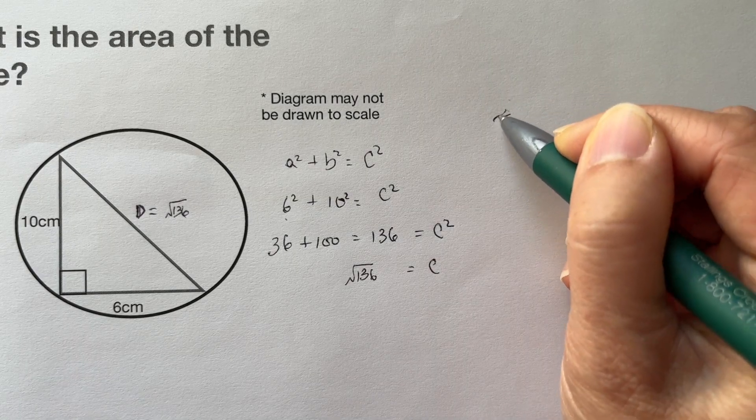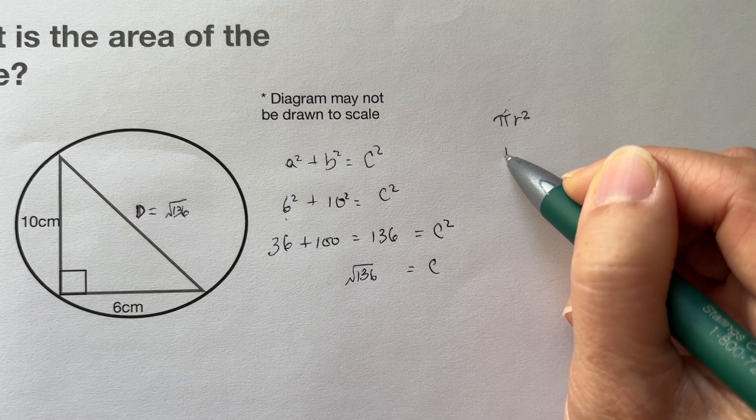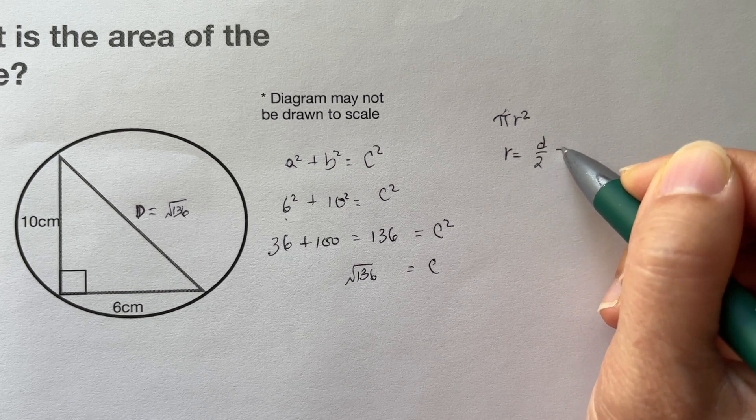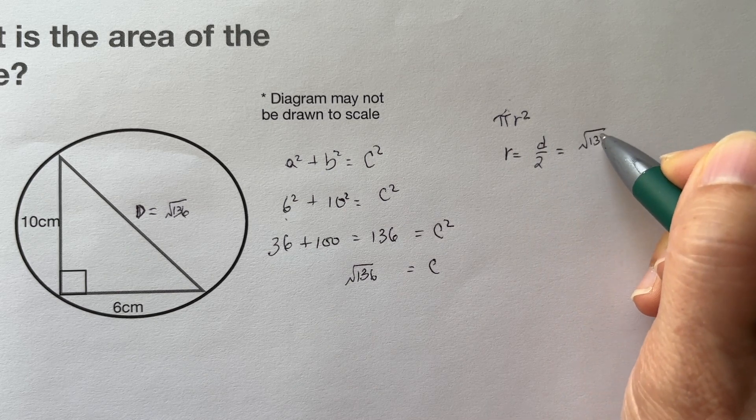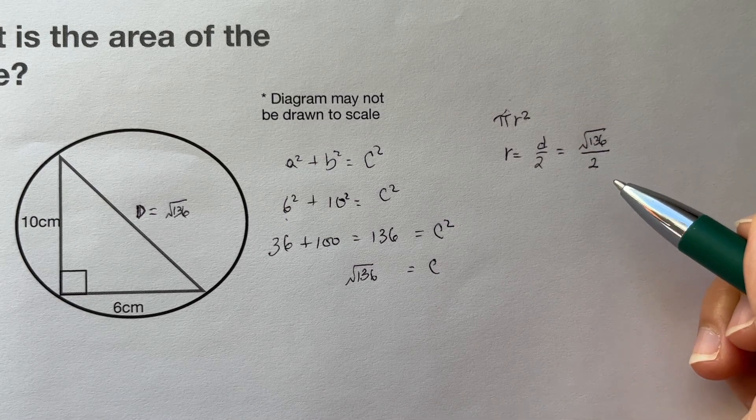The area of a circle is πr². We have the diameter, so the radius equals diameter divided by 2, which is √136 divided by 2. Now let's rewrite this.